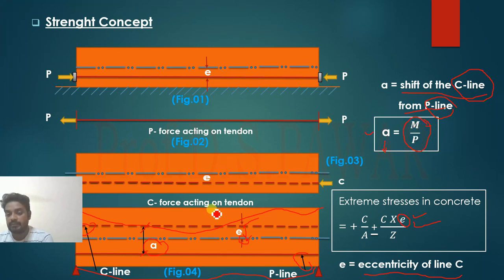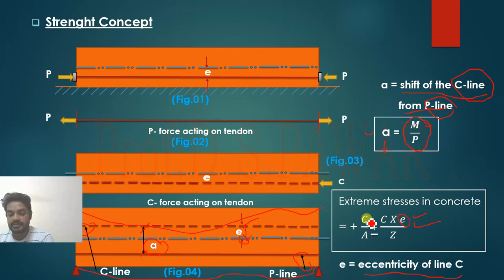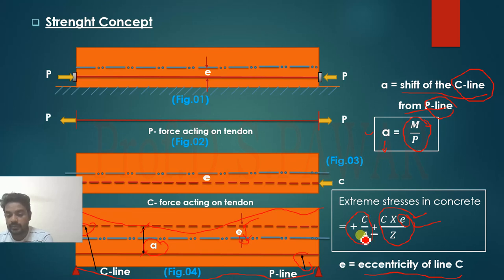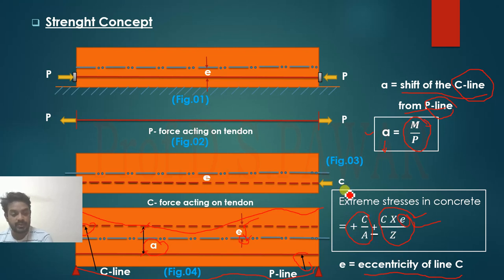M is the moment from self-weight or external load, and P is the prestressing force. When solving the problem, the C force is taken as equal to P — so C = P. The direct stress is C/A and the bending stress is C·e/Z. We use these to calculate stresses at the mid-section and end section of the beam.